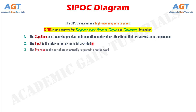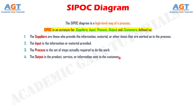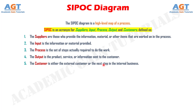Number 3: The process is the set of steps actually required to do the work. Number 4: The output is the product, service, or information sent to the customer. And Number 5: The customer is either the external customer or the next step in the internal business.